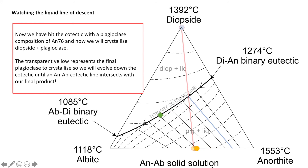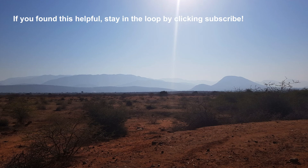We can draw a line to show where they intersect, and that is where our system finishes. So we started crystallizing plagioclase at around 85% anorthite and finished with a final plagioclase of around 58% anorthite. I hope you found this introduction to solid solution phase diagrams useful — you can stay in the loop by clicking subscribe. Thank you for listening.